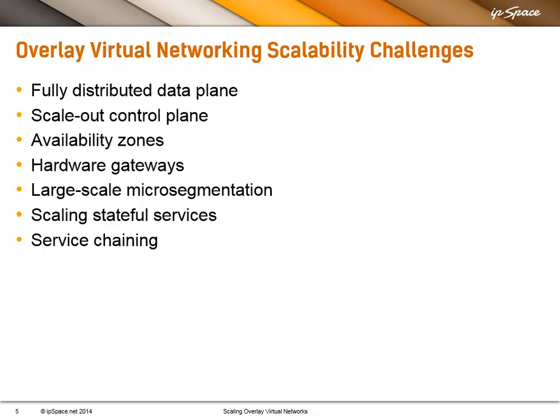Second, sooner or later you will hit the implementation limitations of whatever controller you're using. So if you want to have unlimited growth, you should have a scale-out control plane. Third, if you're building a large environment, you want to have availability zones, so that if your controller fails in one zone, virtual machines in other zones still continue to work. Next, as you grow and require more than ten or a few tens of gigabits of connectivity between the virtual networking and the physical world, you will have to start considering hardware gateways.